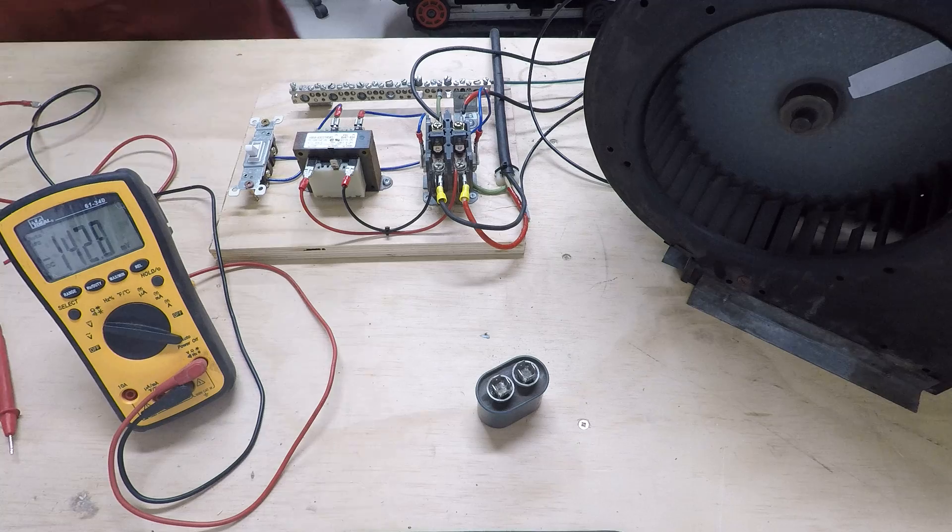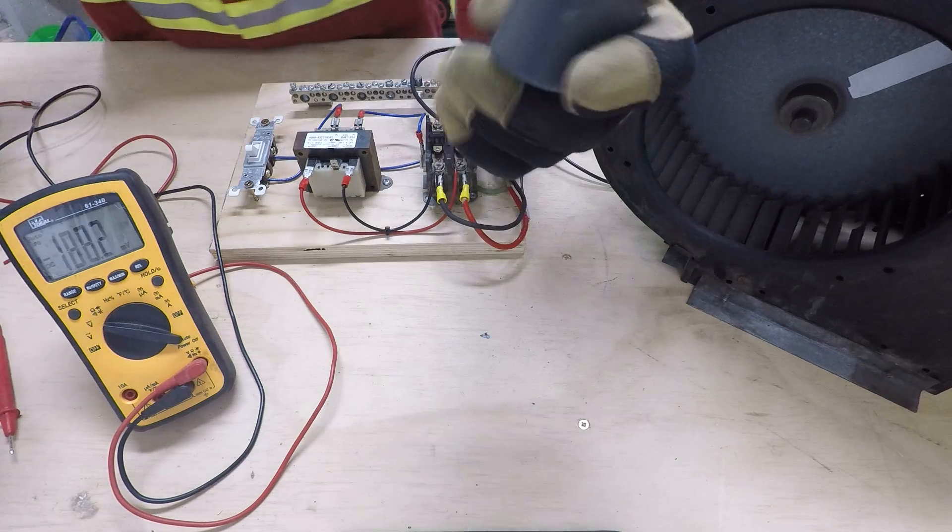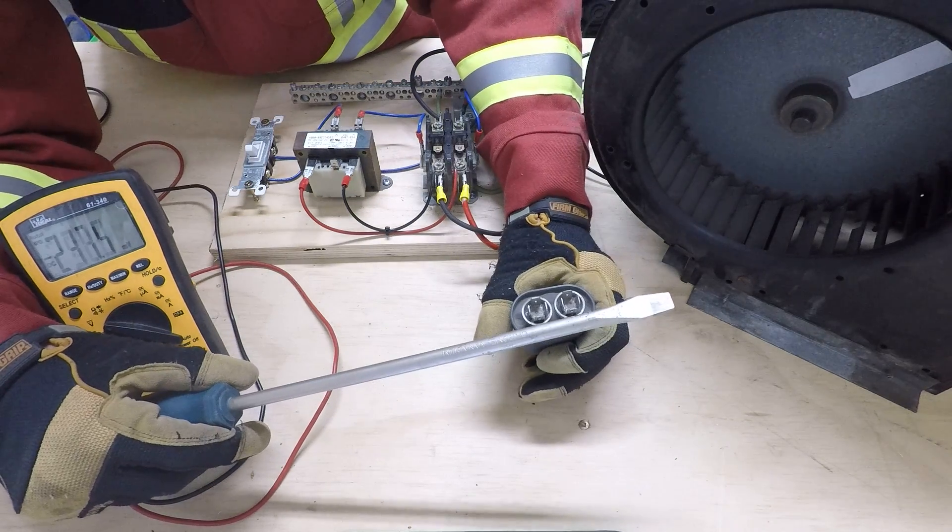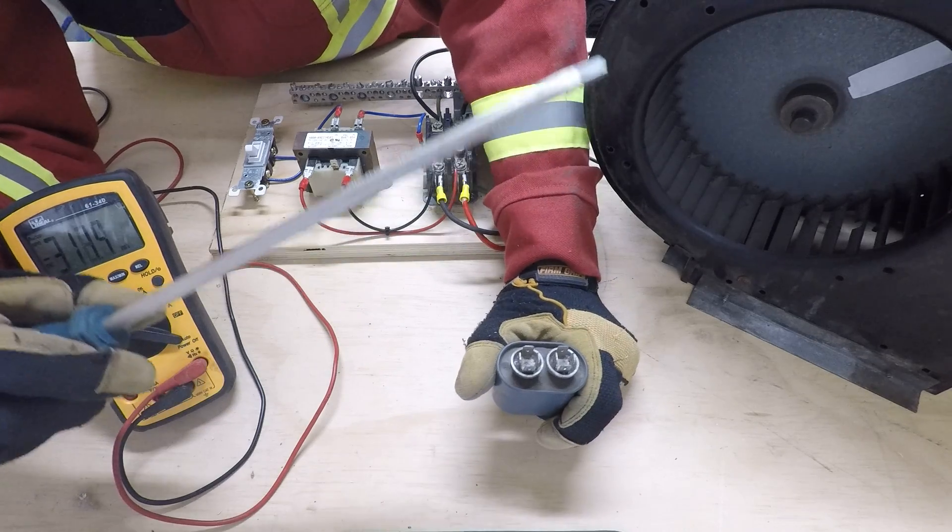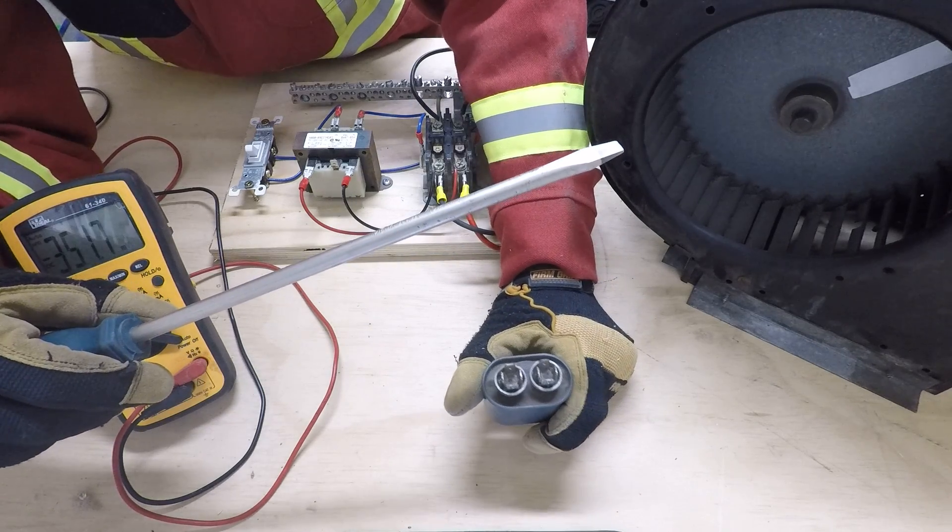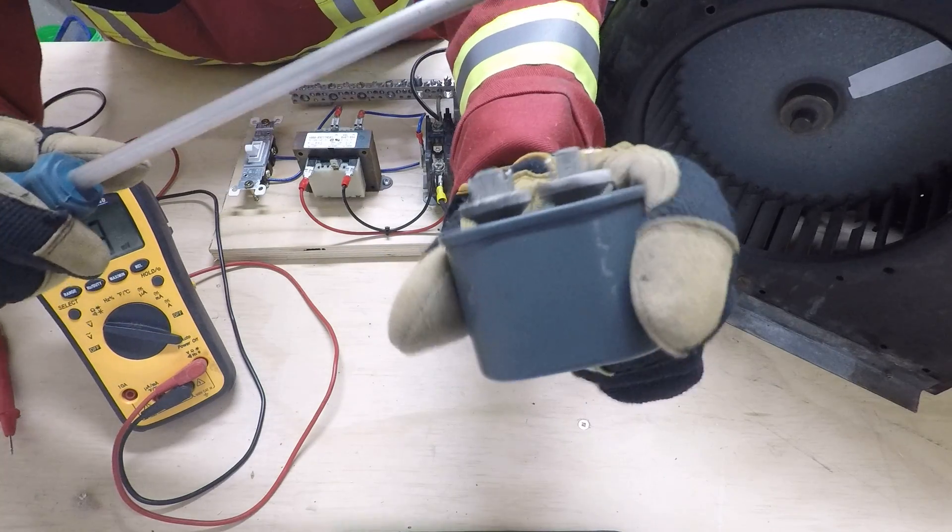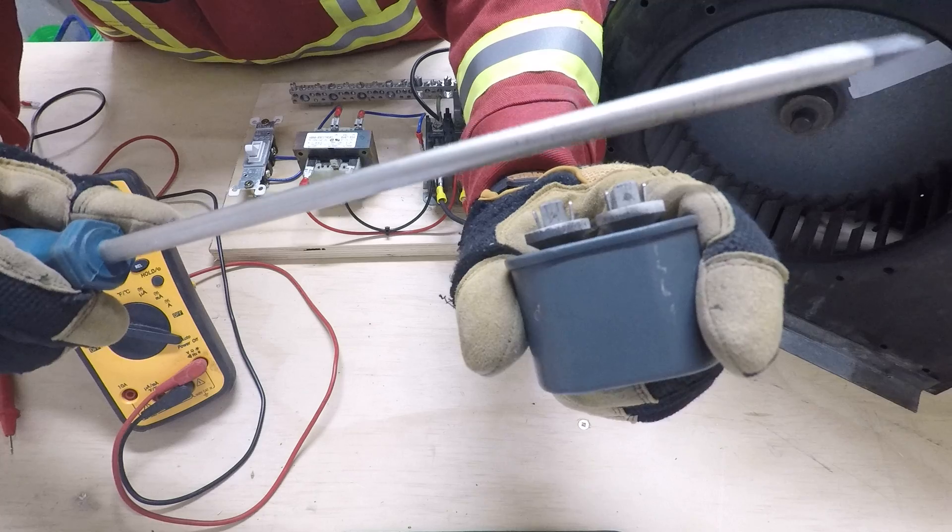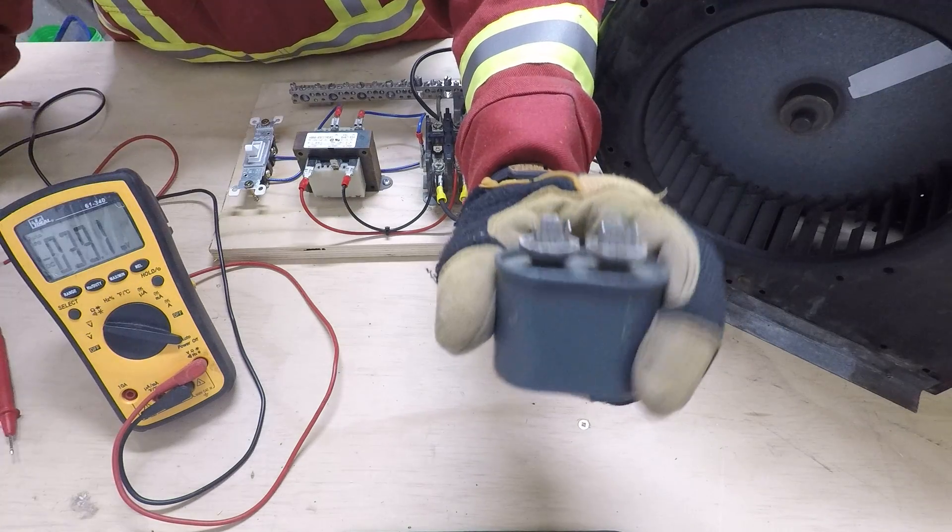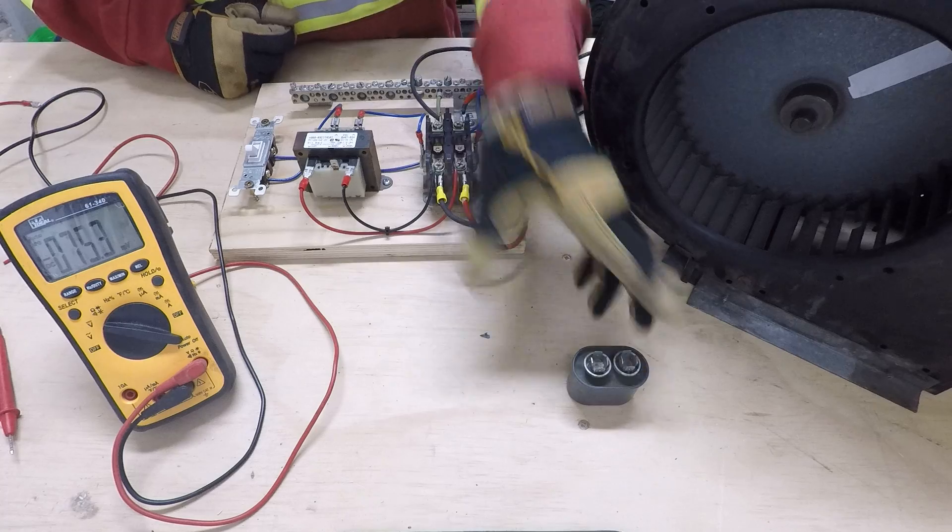Now I'm not recommending this - this isn't exactly the safe method - but I'm going to show you what happens if you don't short a capacitor before you handle it. Okay, you got an arc right there. So this thing was storing 300 volts DC. You've got to make sure you discharge it.